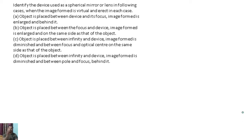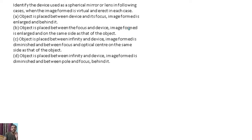In this question it is saying: identify the devices used as a spherical mirror or lens in the following cases when image formed is virtual and erect in each. The first case: the object is placed between a device and its focus, and the image formed is enlarged and behind it.